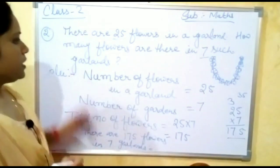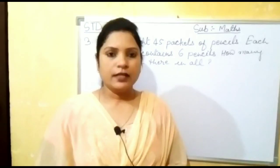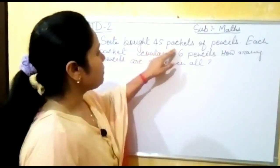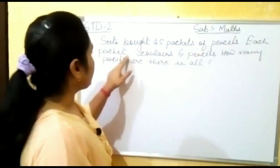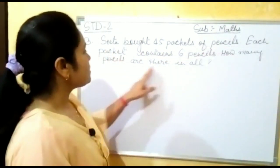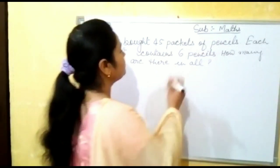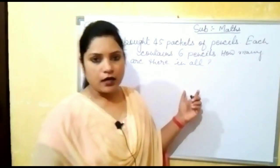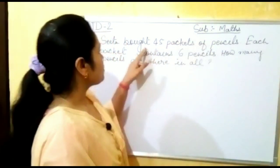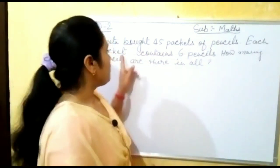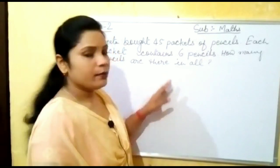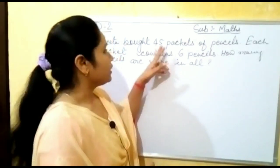This is the answer of question 2. Let us see question number 3. Sita bought 45 packets of pencils. Each packet contains 6 pencils. How many pencils are there in all? Here, 45 packets of pencils are bought by Sita and in one packet there are 6 pencils. We need to find the total number of pencils in all 45 packets.